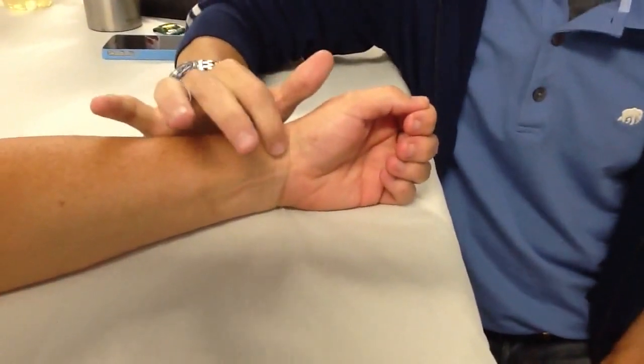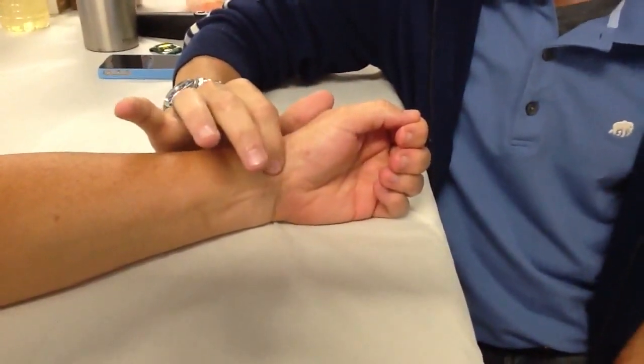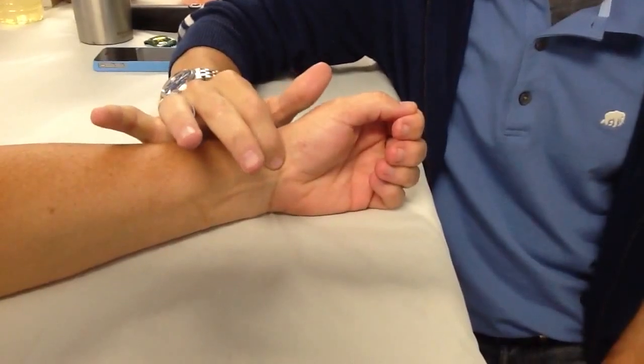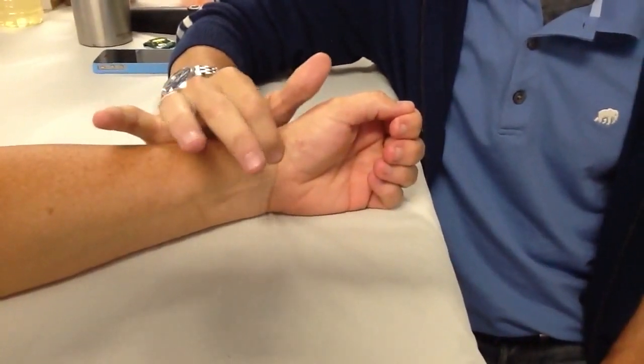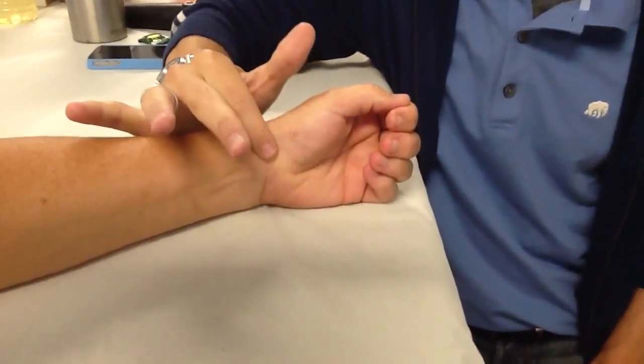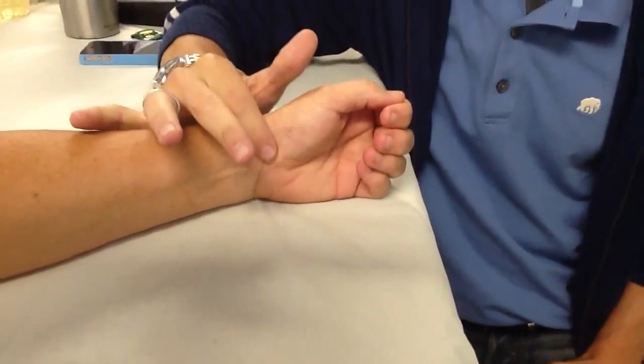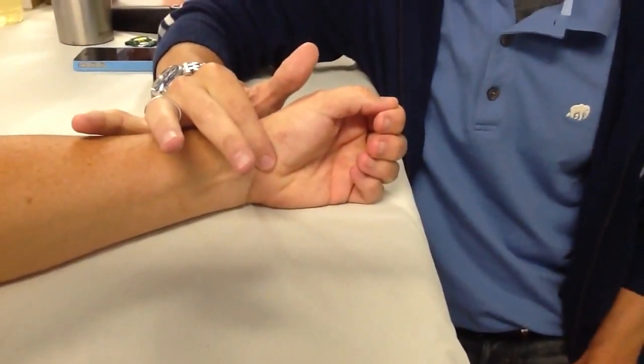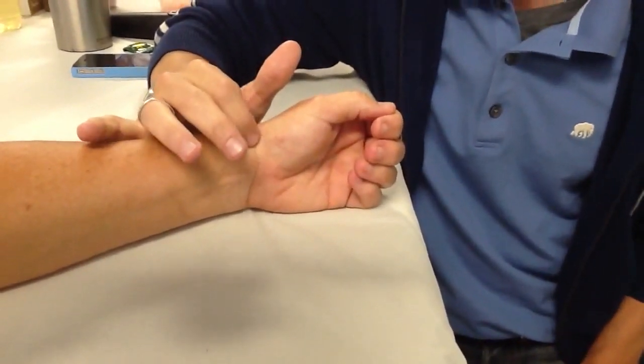So the special lung pulse, we're going to find our scaphoid bone and we're going to find the junction between the tendon and the scaphoid, and we're going to slide our finger on this 45 degree angle.